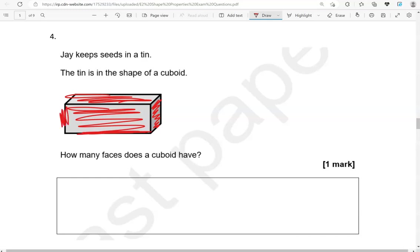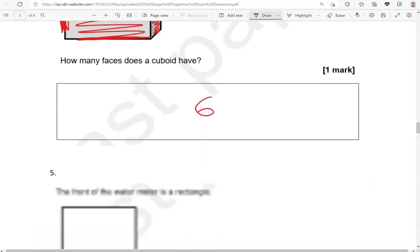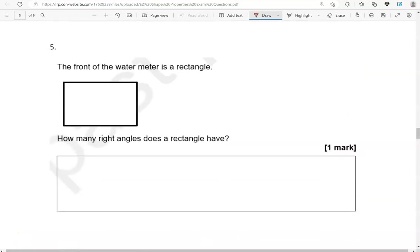The front of the water meter is a rectangle. How many right angles does the rectangle have? It has 1, 2, 3, 4. All four angles are right angles in the case of a rectangle or square.